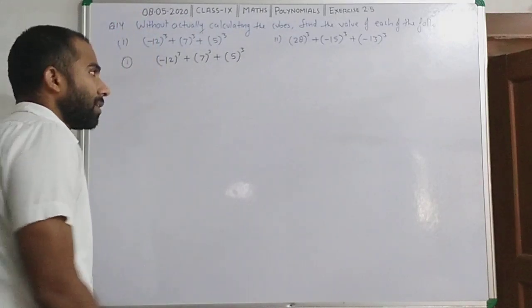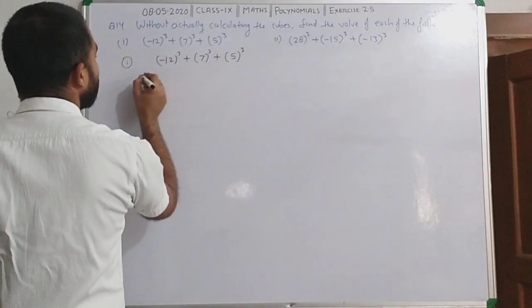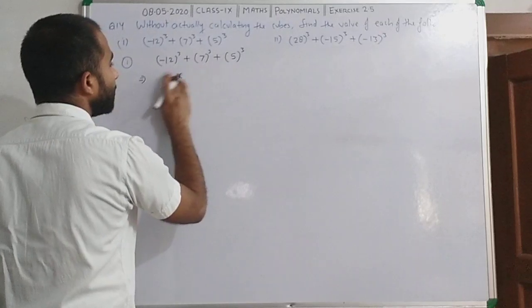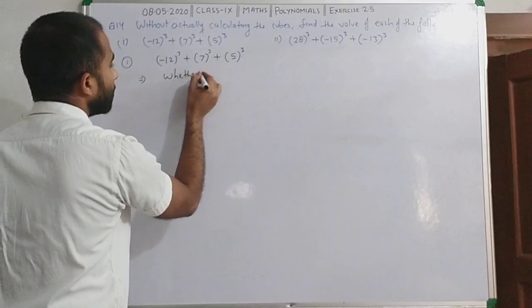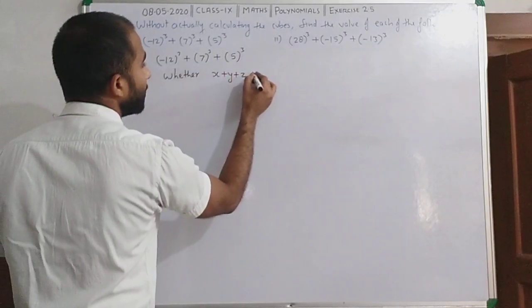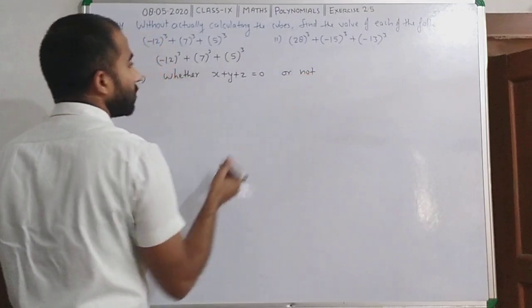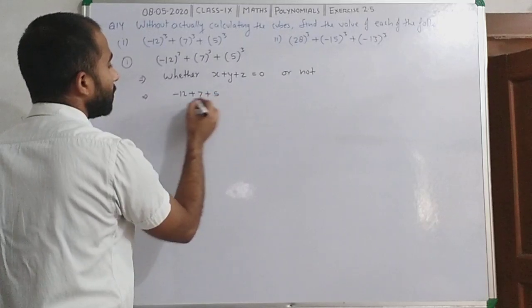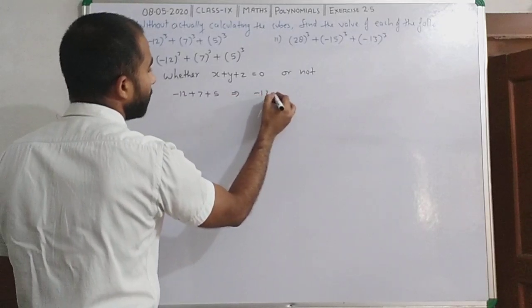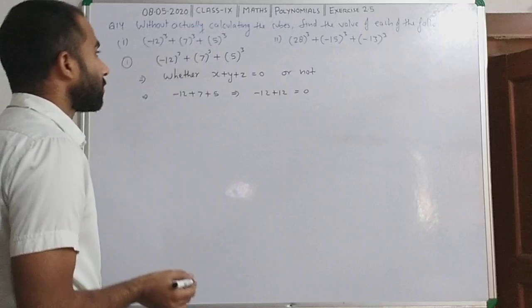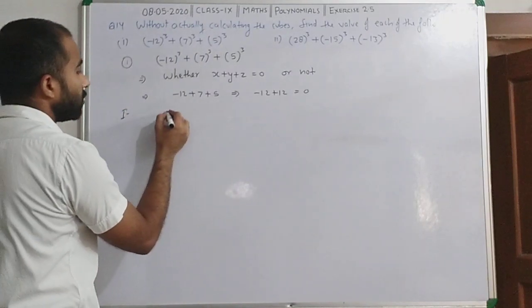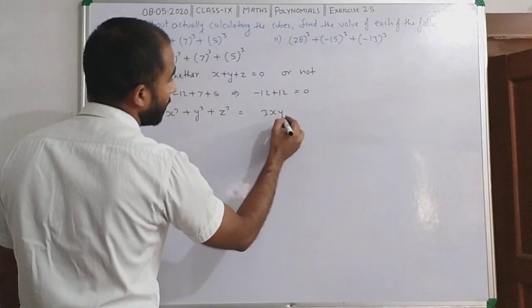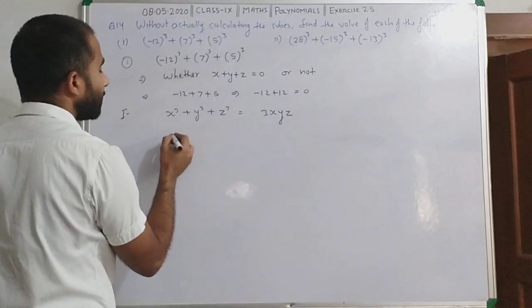सबसे पहले हम verify करते हैं. यह x हो गया, यह y हो गया, यह z हो गया. Check करते हैं whether x plus y plus z is equal to 0 or not. So: minus 12 plus 7 plus 5 = minus 12 plus 12 = 0. इसका मतलब हम identity use करेंगे: x³ plus y³ plus z³ is equal to 3xyz. So बस 3xyz की value put कर लेंगे.